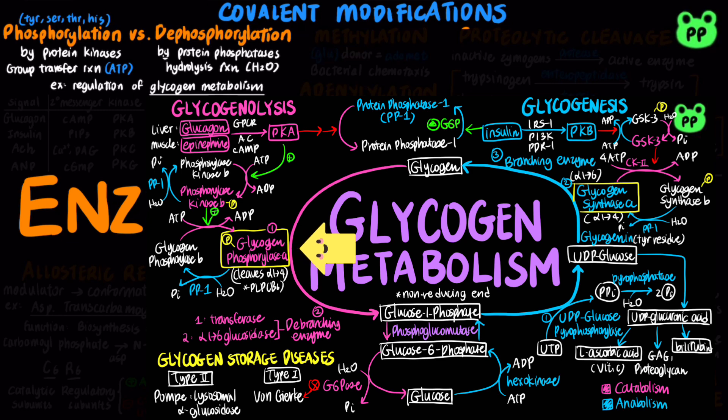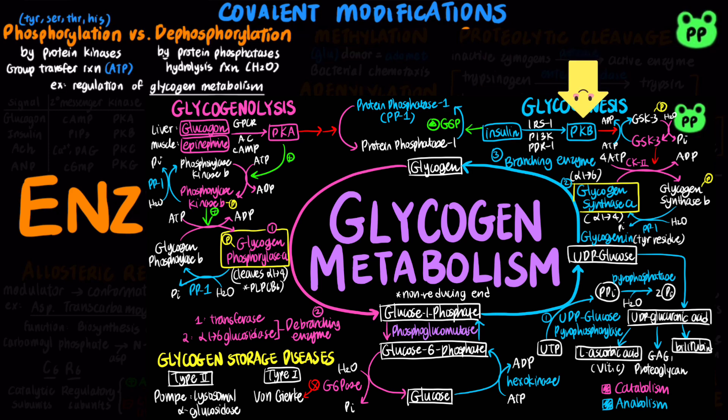On the other hand, insulin promotes glycogen synthesis through double negative regulation. Insulin activates protein kinase B, which phosphorylates and inactivates glycogen synthase kinase 3, which normally phosphorylates and inactivates glycogen synthase. Double negative produces a net positive effect for glycogen synthesis.